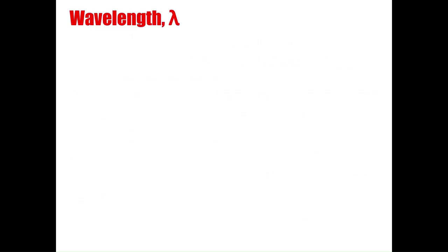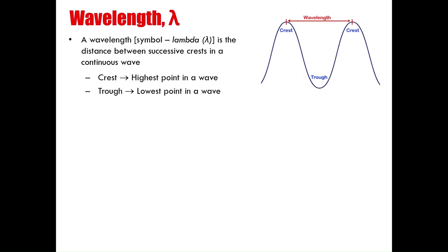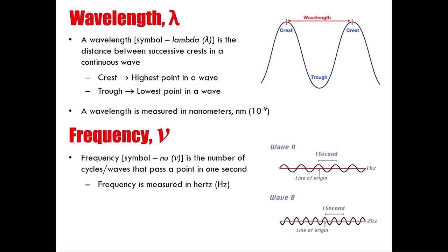Let's formally define wavelength and frequency. A wavelength is the distance between successive crests in a continuous wave. A crest is the highest point in a wave and a trough is the lowest point. A wavelength is the distance from the crest of one wave to the crest of the adjacent wave — essentially the distance of one waveform. The symbol for wavelength is the Greek letter lambda, and it is measured in nanometers — that's 10⁻⁹ meters. Frequency is symbolized by the Greek letter nu, and it is measured in Hertz.